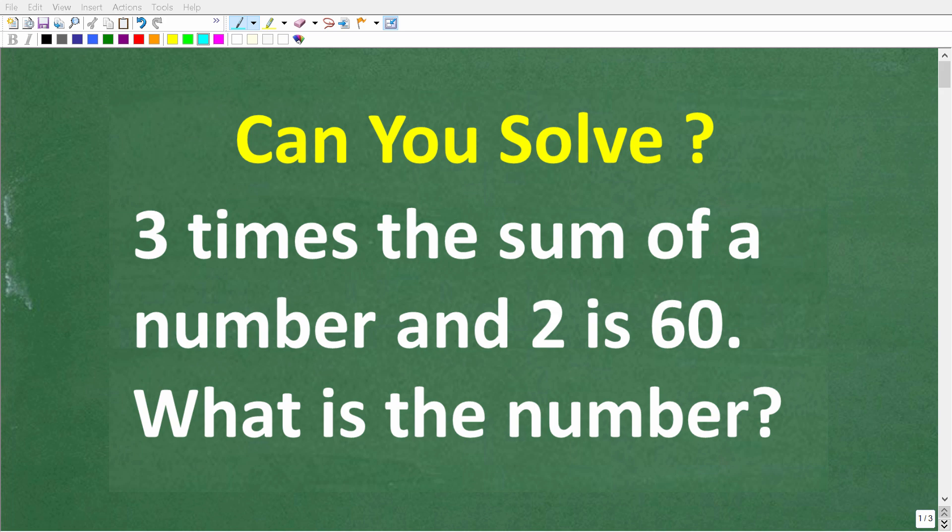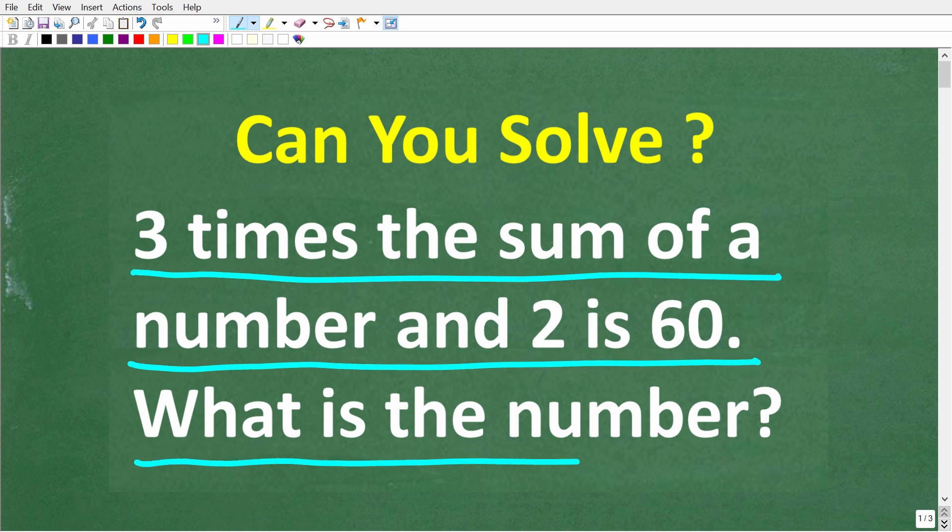Okay, so let's see if your math skills are strong enough to figure out this math question. So the question is the following. Three times the sum of a number and two is 60. What is this number?